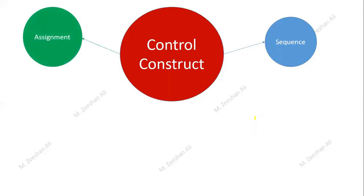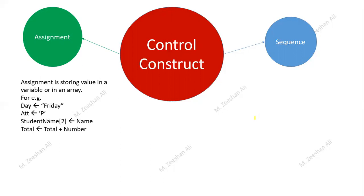The second control construct is assignment — storing values in arrays or variables. For example, 'day ← Friday' stores the value Friday in the variable day. In another statement, a character 'p' is stored in variable 'at'. In a third statement, 'StudentName[2]' stores whatever the name value is at index position two of that array.